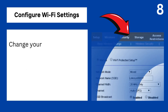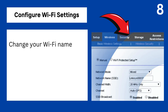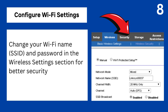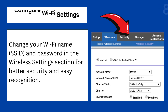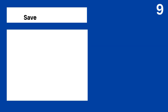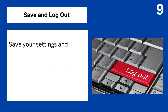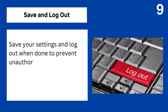Step 8: Configure Wi-Fi settings. Change your Wi-Fi name (SSID) and password in the wireless settings section for better security and easy recognition. Step 9: Save and logout. Save your settings and logout when done to prevent unauthorized access.